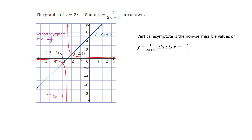Let's look at another example: y equal to 1 over 2x plus 5. We first find the vertical asymptote, which is the non-permissible value — the value where the denominator equals 0. Since the denominator cannot equal 0, x cannot equal negative 5 over 2. So x equal to negative 5 over 2 is the vertical asymptote. We also have a horizontal asymptote, which is the x-axis, and we can draw the graph accordingly.